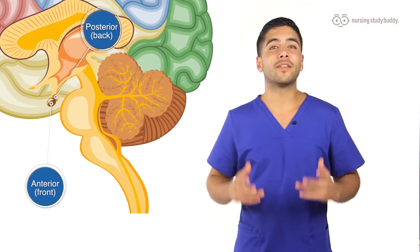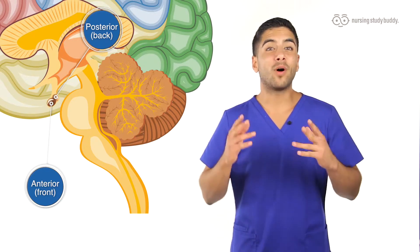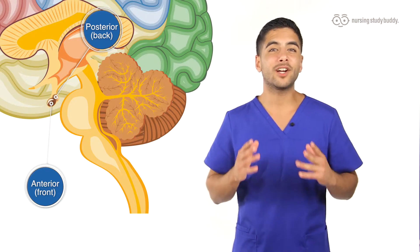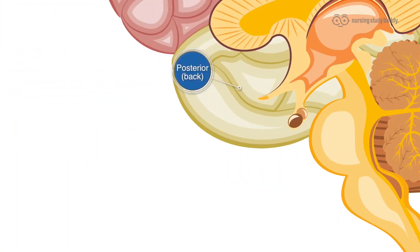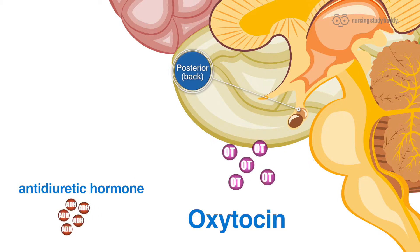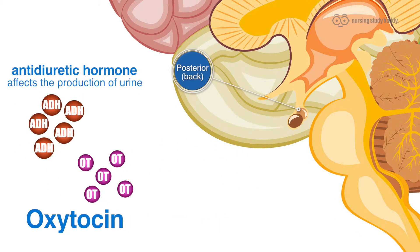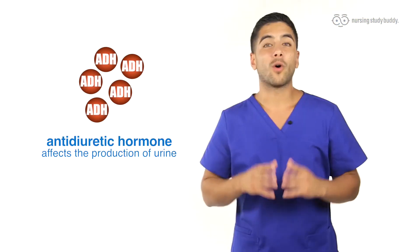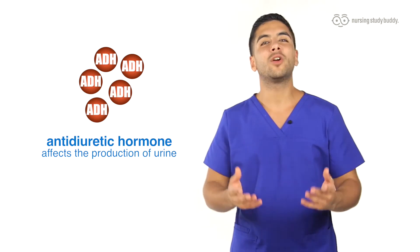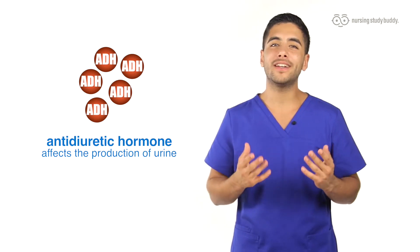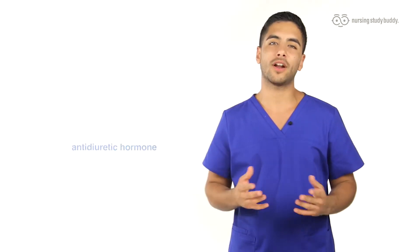Now let's talk about the posterior pituitary gland. The posterior pituitary gland creates two basic kinds of hormones: it creates ADH or antidiuretic hormone, and it creates oxytocin. ADH or antidiuretic hormone affects the production of urine, or better said, it helps the kidneys retain urine so the body doesn't lose too much water.